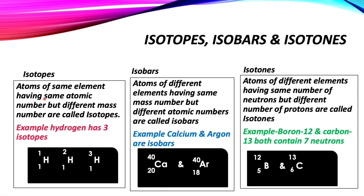Isotopes: atoms of the same element having the same atomic number but different mass number are called isotopes. For example, you can see that hydrogen — these are the three isotopes of hydrogen.